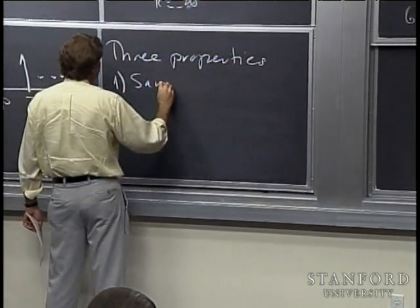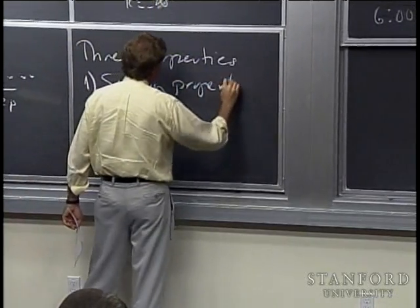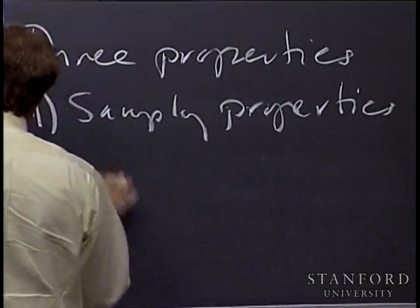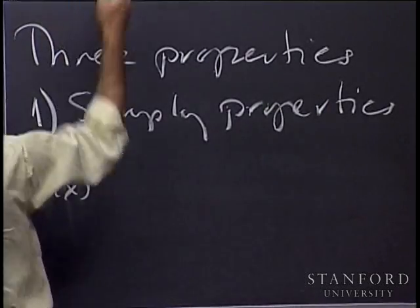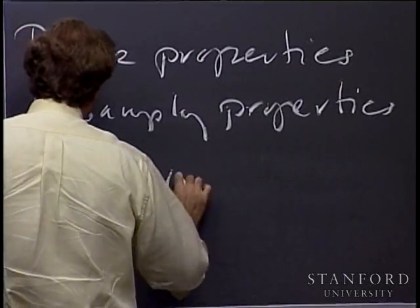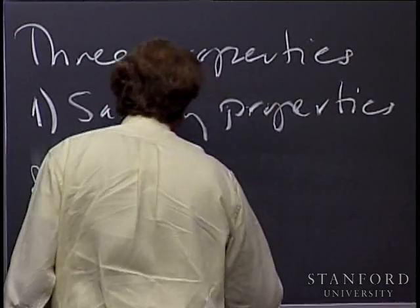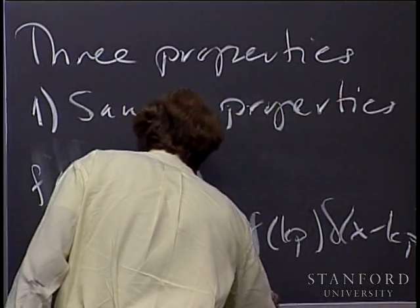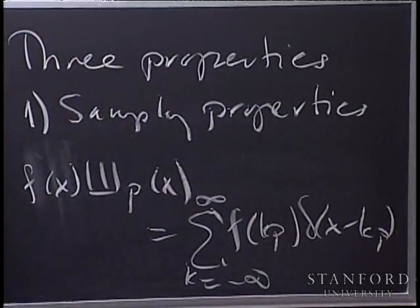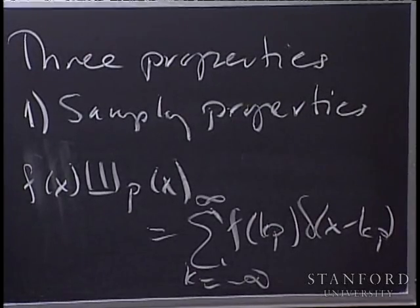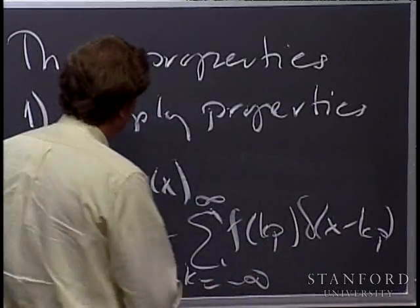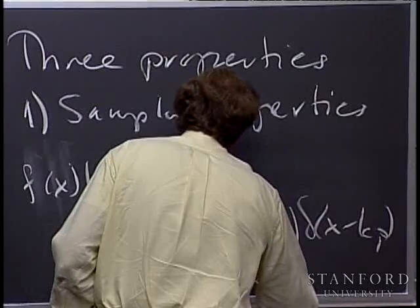The first is the sampling property. If I take a function and multiply it by the Shah function, it samples the function at the points K·P. So f(x) times the Shah function is the sum of f(K·P) · delta(x minus K·P), summed from minus infinity to infinity. That sampling property of the Shah function follows from the sampling property of the delta function — a shifted delta multiplied by a function pulls out the value at that point.